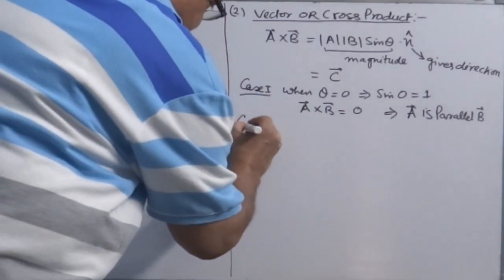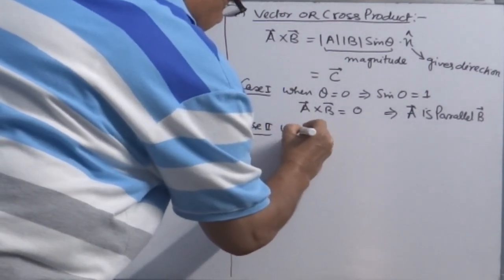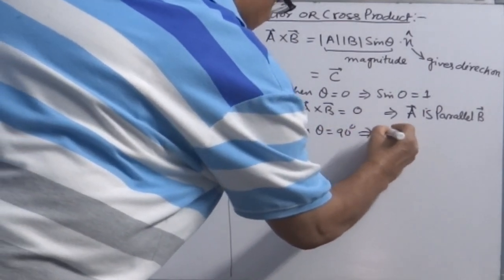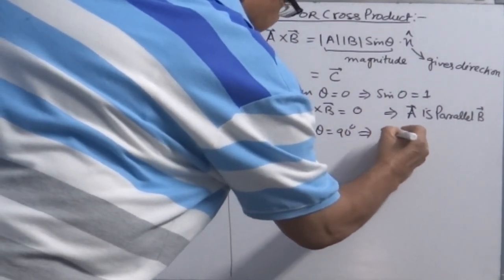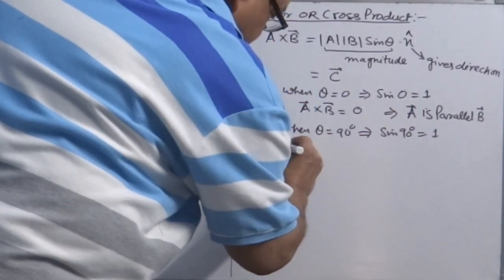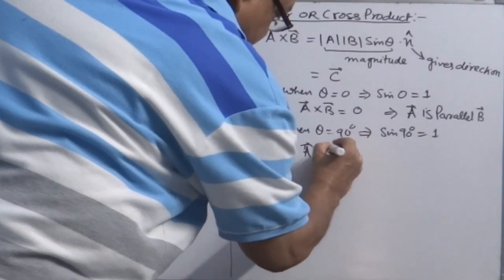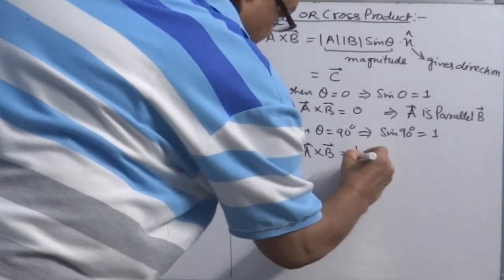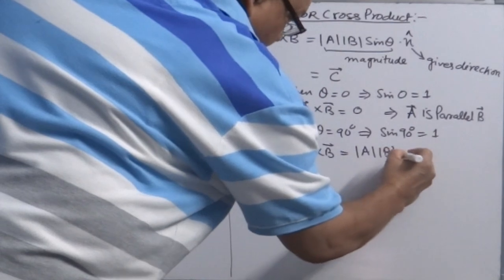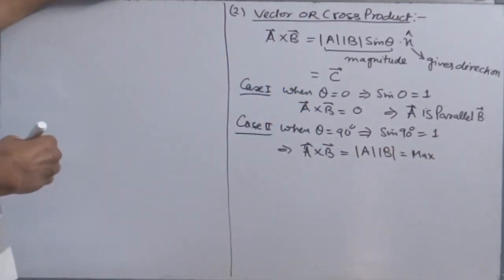The cross product is used for proving parallel vectors. For proving that two vectors are perpendicular to each other, the right product to use is the dot product, as you have seen earlier. Case 2: when theta is equal to 90 degrees, the value of sin 90 is maximum, that is 1, so the cross product of two vectors will have maximum value, that is |a| times |b|.